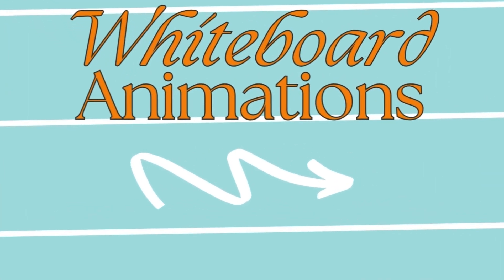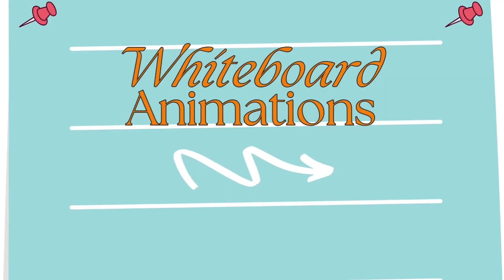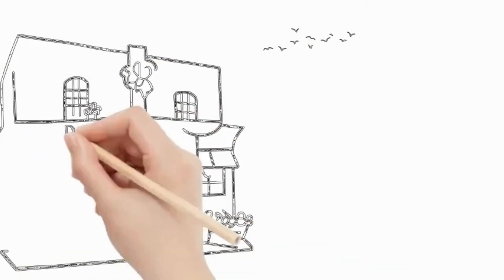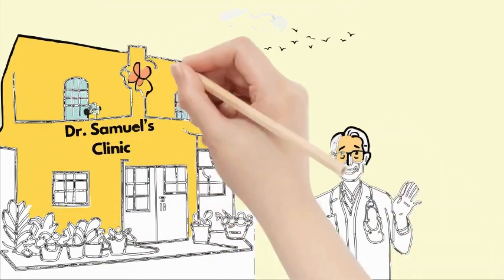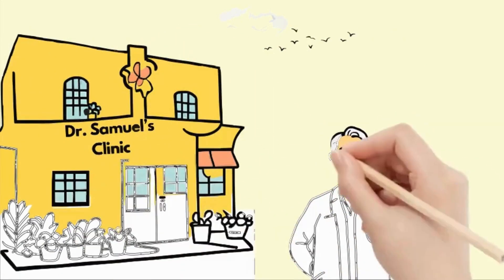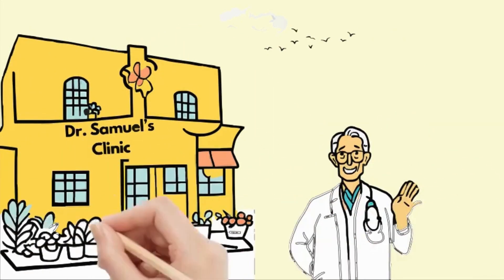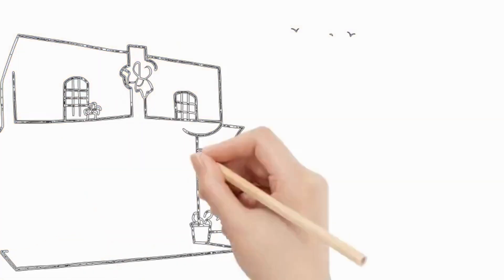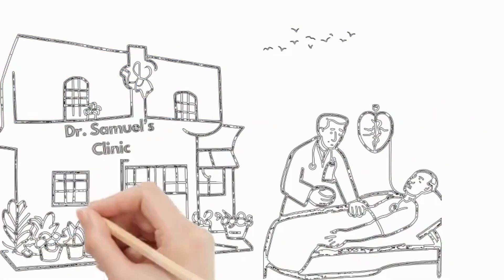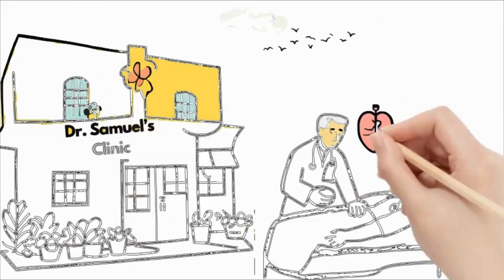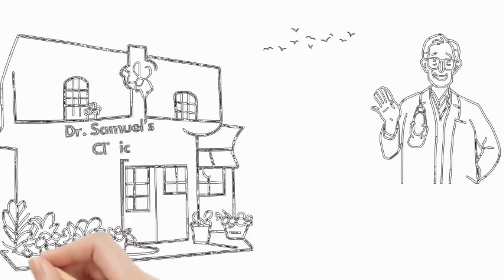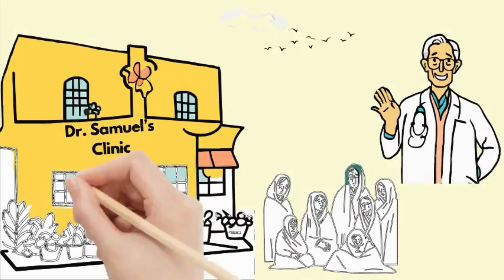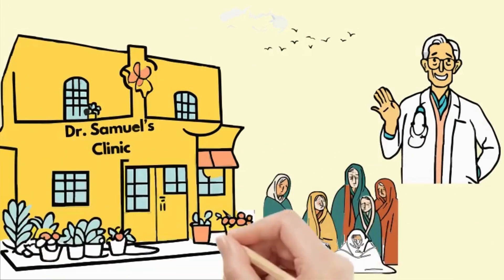We are going to create the following whiteboard animation story. In a beautiful town called Greenville, there lived a doctor named Dr. Samuel. His small clinic, painted a cheerful shade of yellow, stood at the heart of the town. Dr. Samuel's reputation extended far beyond his town. People would travel for miles, crossing rivers and winding through dense woods just to seek his expertise. One cold winter, an epidemic swept through the region. The townspeople were struck with a severe flu and panic began.